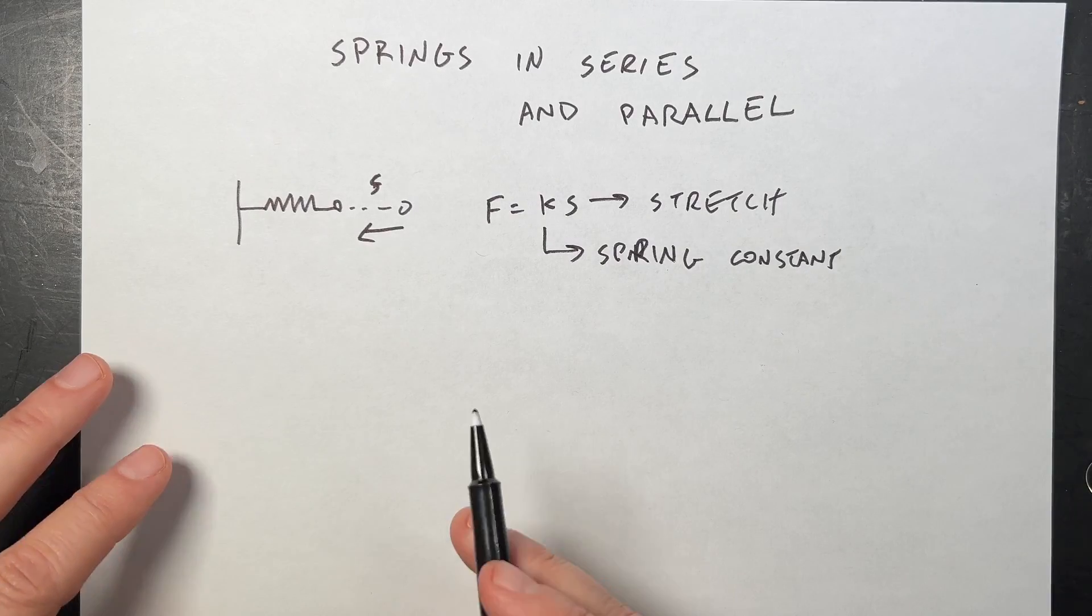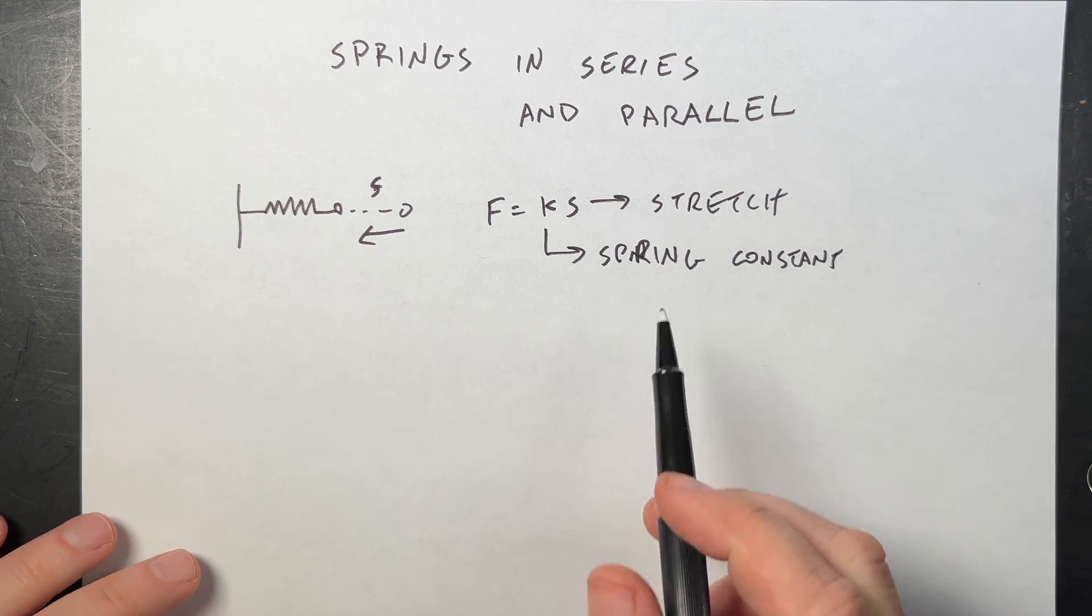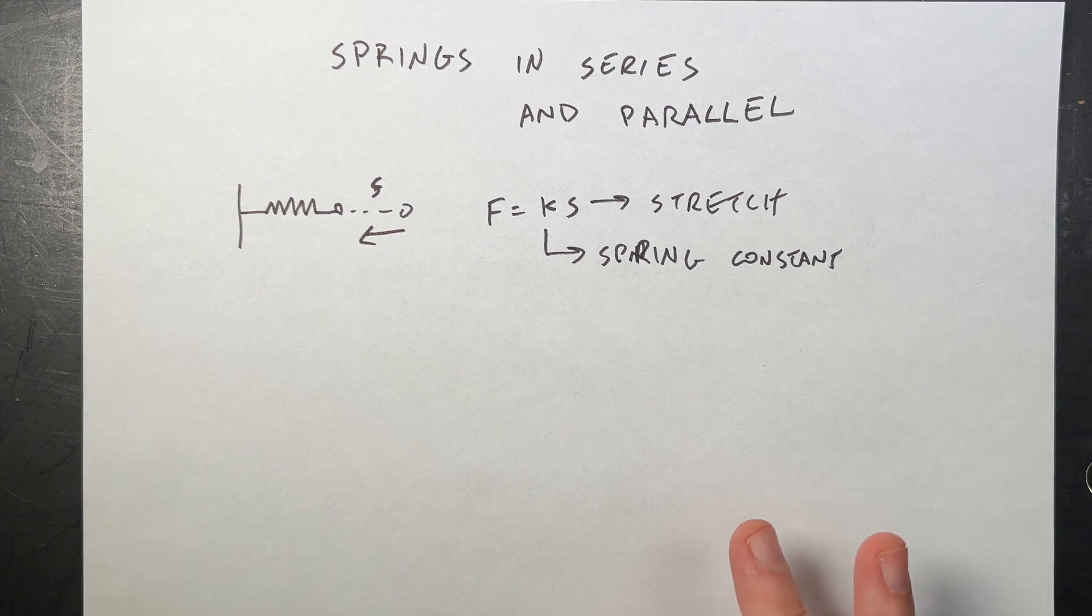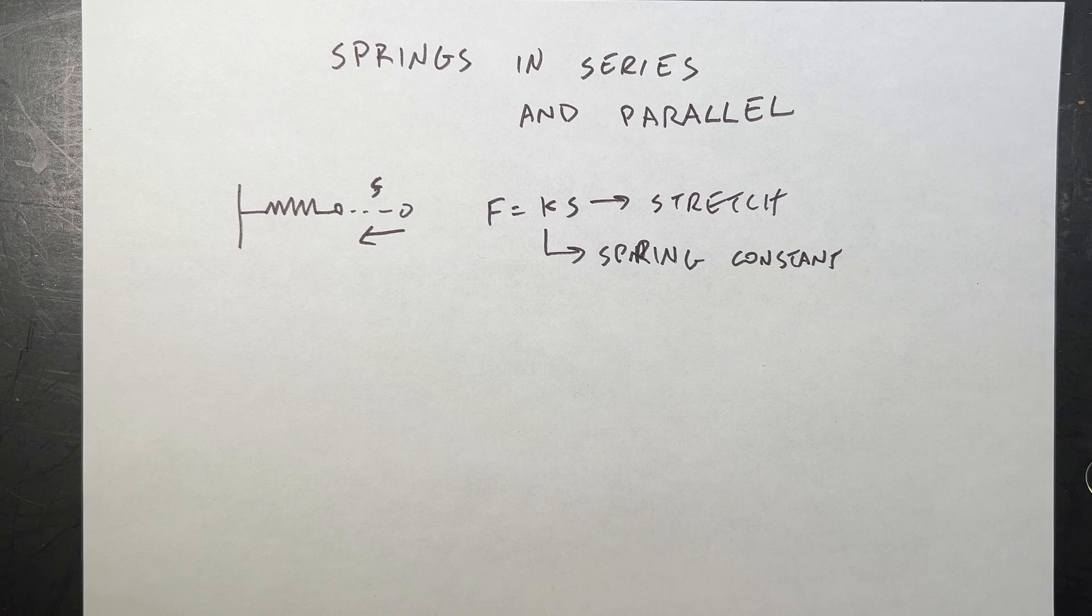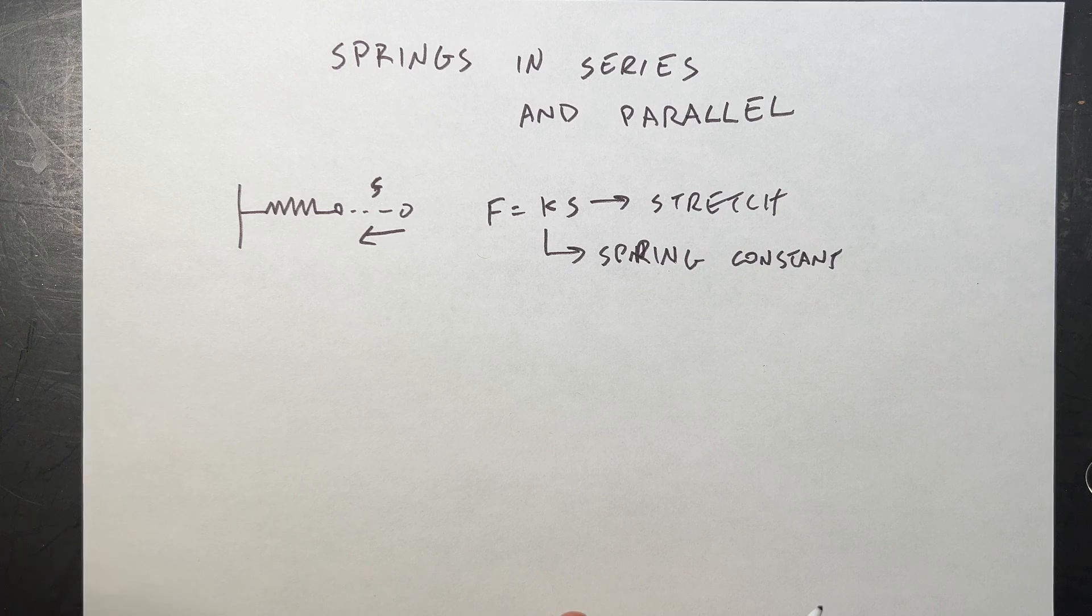If you want to make a better, more elegant equation, then you would need to have some vector stuff in there. But we don't have to do that. Now the question is, what would happen if I use two springs? Two different springs with different spring constants.